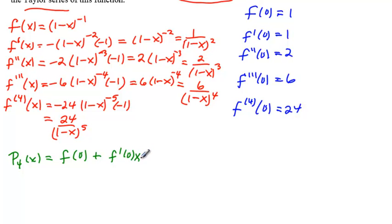plus f double prime at 0 over 2 factorial, which I'll just write 2, times x squared plus f triple prime at 0 over 3 factorial, which I'll write that for now, times x cubed,